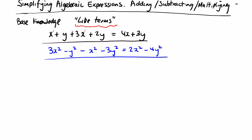Our answer would be: x plus 3x is 4x, and y plus 2y is 3y. Similarly, we have 3x squared minus 1x squared — that's the one we don't see — so 3 minus 1 is 2x squared. And now we have minus 1y squared; 1 minus 3 is minus 4y squared. Write these two examples into your copy with the heading and we'll continue.